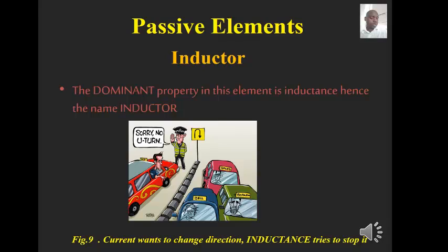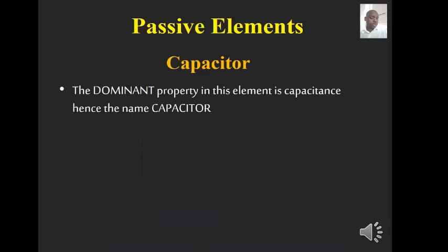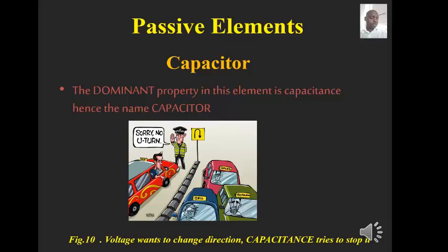Similarly, when looking at capacitance, we take the voltage as that same person trying to change either in direction or in magnitude, and the traffic cop — which is the capacitance — will say you can't change that direction. So capacitance opposes the change in voltage.